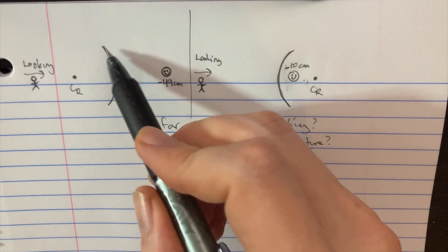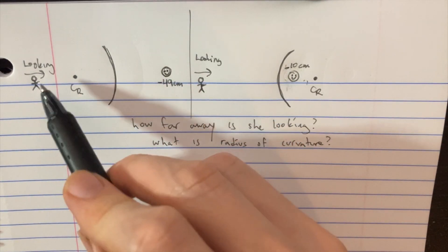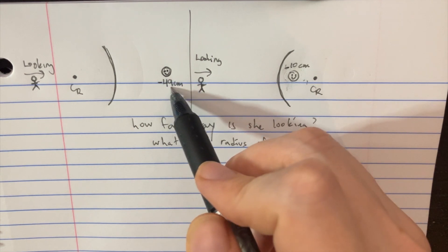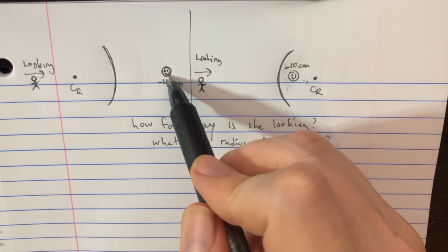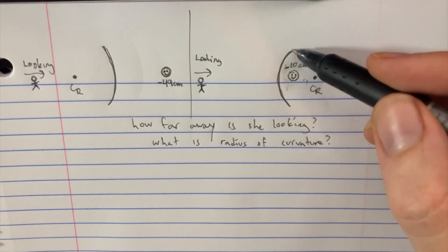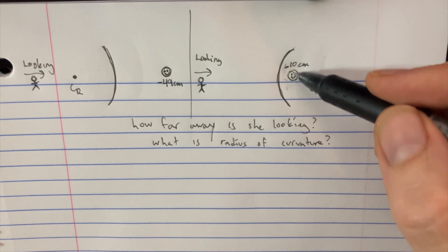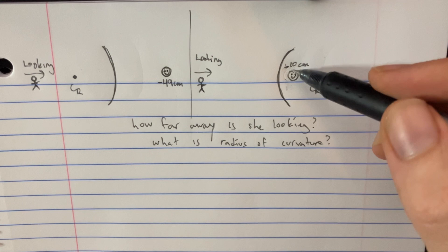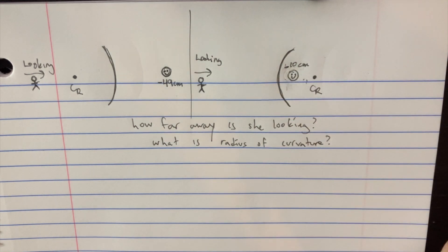Someone's looking into a hubcap of a car and sees their reflection 49 centimeters past the hubcap. Then they'll flip it over and she sees the image much closer over here at just 10 centimeters past the hubcap.